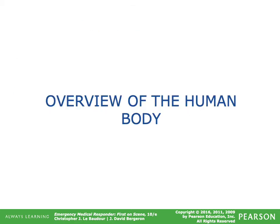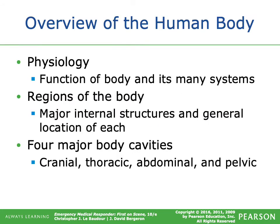Now, an overview of the human body. Physiology is defined as the function of the body and its many systems. We'll look at regions of the body, major internal structures, and general locations of each. The four major body cavities are: cranial, thoracic, abdominal, and pelvic.